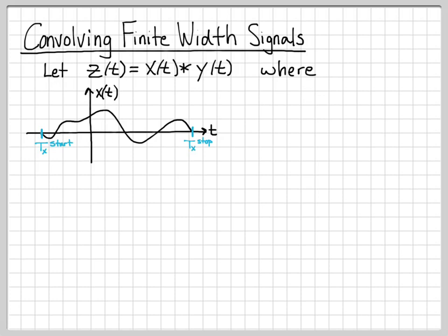The start time we're going to denote by t sub x superscript start, referring to signal x of t. All times before this, x of t is 0. And then x of t stops at t sub x superscript stop. For all times greater than this time, x of t is equal to 0. This is why I call this a finite width signal. It only exists on the time axis for this finite period of time.